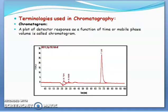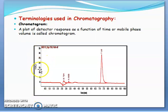Now let's see the different terminologies used in chromatography. The first is the chromatogram — it is a plot of detector response as a function of time or mobile phase volume. The x-axis represents retention time and the y-axis represents detector response. This plot is called the chromatogram.